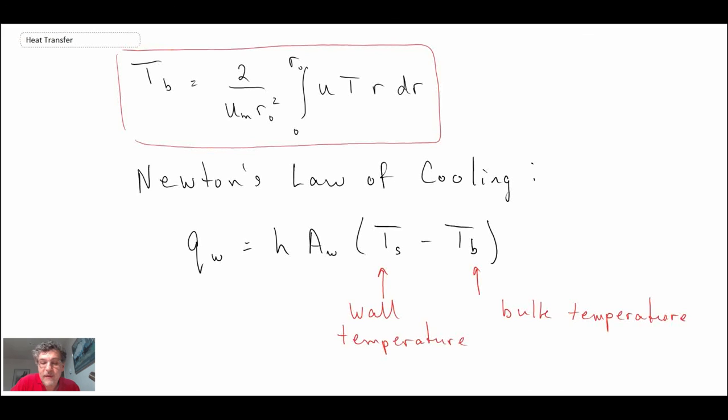That is the mean or bulk temperature and how we would then use it in Newton's law of cooling. What we'll be doing in the next segment is starting to take a look at Nusselt numbers for pipe flow, and those then become the way by which we can estimate the convective heat transfer coefficient, enabling us to determine heat flux for pipe flow.